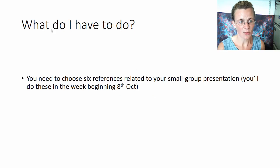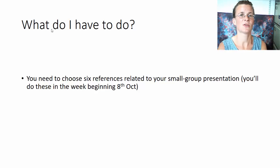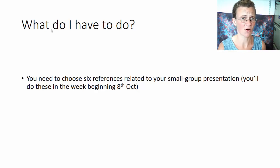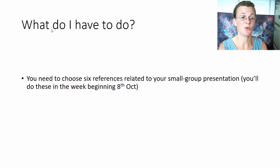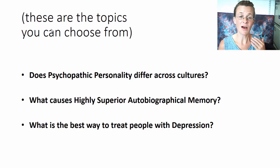What do you have to do? Well, it involves compiling and choosing six references about a certain topic, and that's the same topic that you had to do your group presentation about. Your tutor will tell you more about that. In that small group presentation, which you do in the week beginning the 8th of October, as a group, you have to find articles. You can choose one of these three topics.